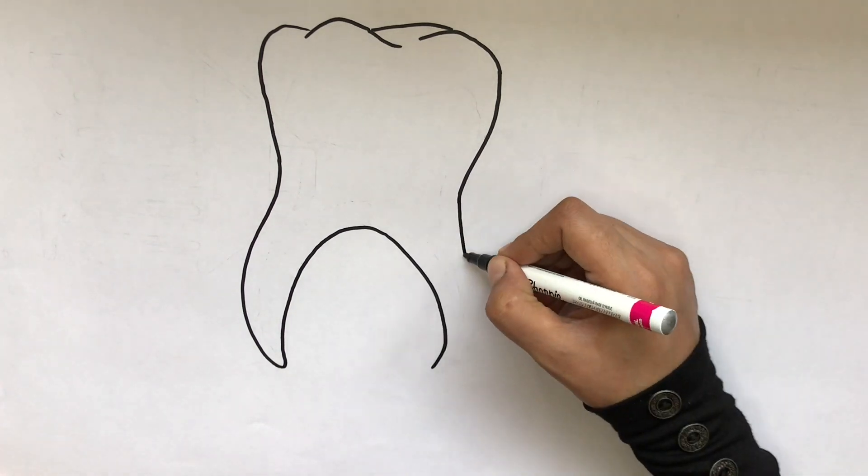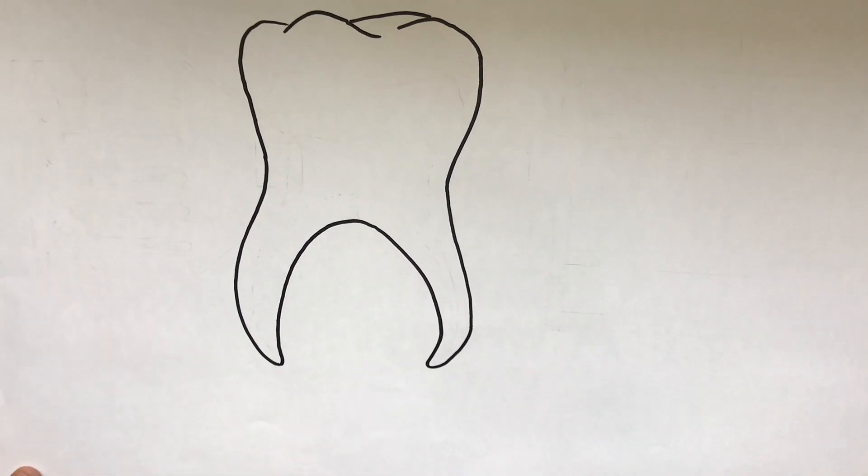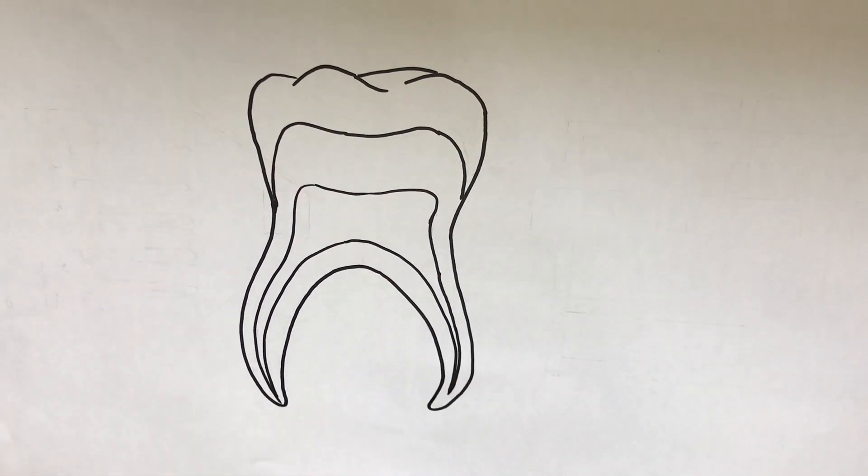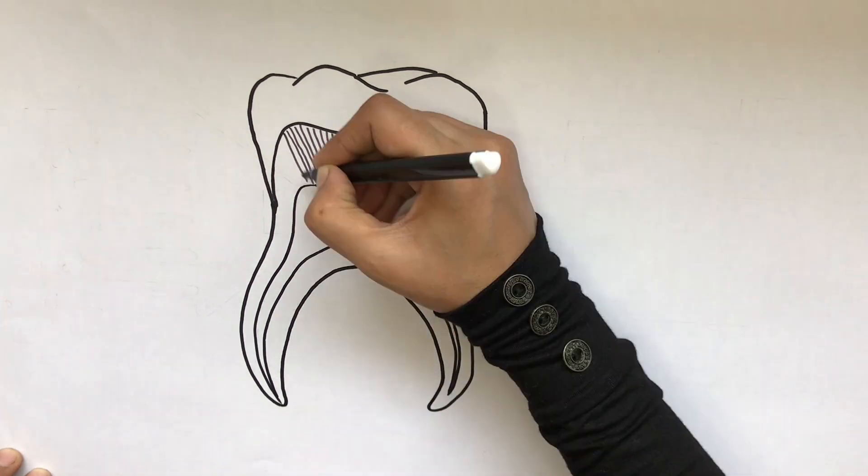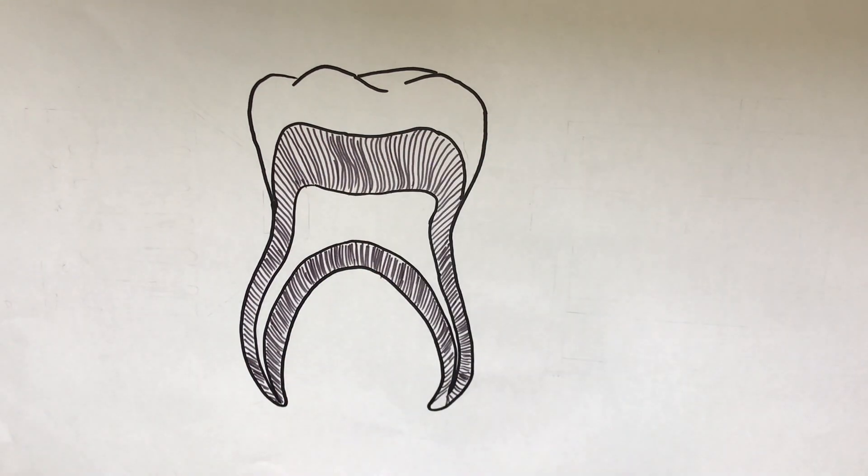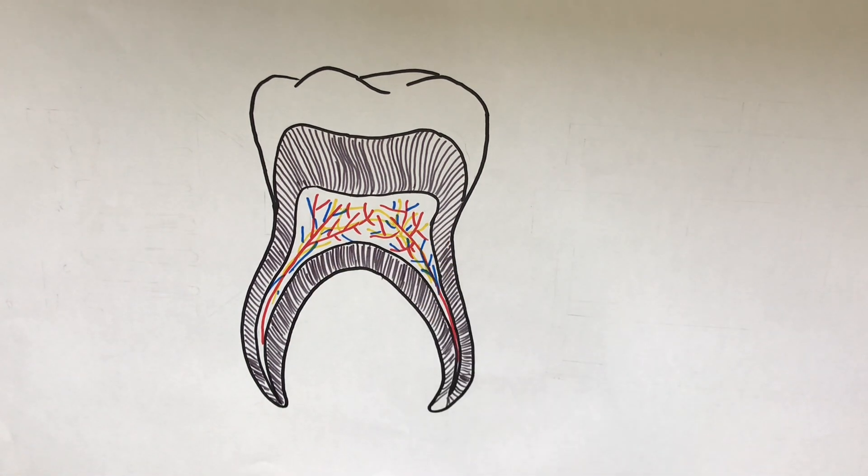This video will be divided into two parts. In the first part, we will talk about the structure, composition, and types of dentine, and in the second part about dentinogenesis or the process of dentine formation. If you haven't watched my previous videos on developmental stages of the tooth, please watch them first for a much clearer concept on today's topic.